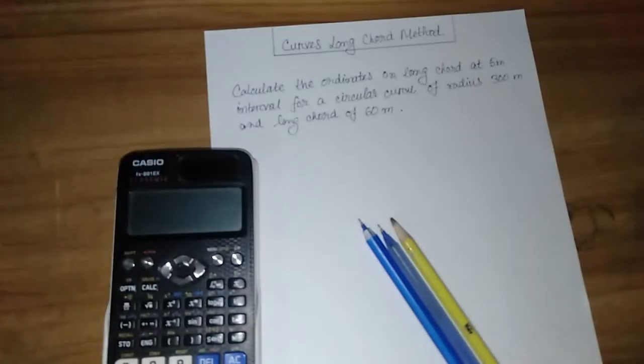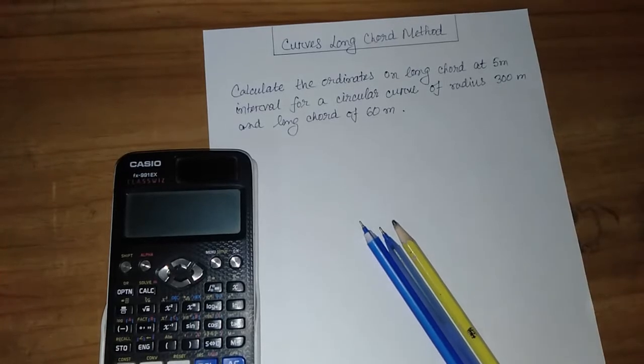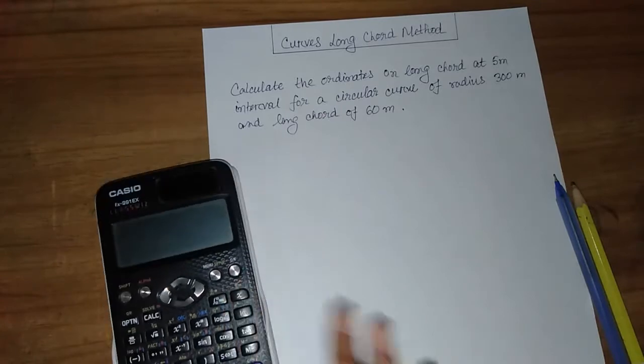Hi guys, welcome to Engineering School. Today we will solve a problem about curves long chord method. The question is: calculate the ordinates on long chord at 5 meter intervals for a circular curve of radius 300 meter and long chord of 60 meter. So let's start.